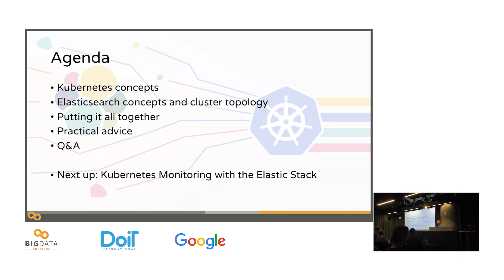Our agenda for today, at least for my talk, is to start with Kubernetes concepts. Most of you are already using Kubernetes, but we'll lay some ground on Kubernetes to understand what it is, how to work with it, and specifically some features which we will need in order to run Elasticsearch on Kubernetes. Then we'll talk about Elasticsearch concepts — the ones important to understand how to run Elasticsearch on Kubernetes — and then give some practical advice: how to run it, how to size it, and things like that.